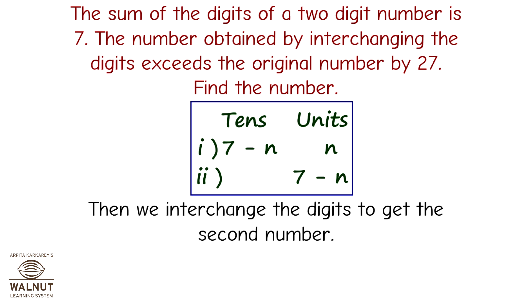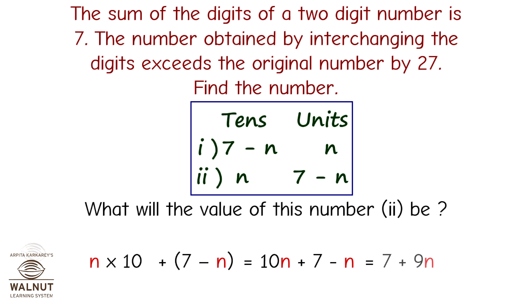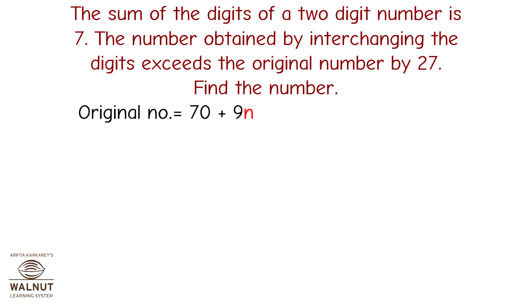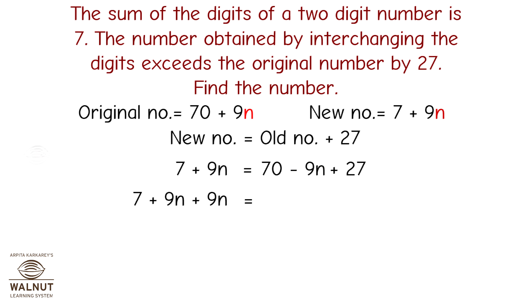We interchange the digits to get the second number. Its value is n into 10 plus 7 minus n, which equals 9n plus 7. Our original number equals 70 minus 9n and our new number equals 7 plus 9n. The new number equals the old number plus 27. Therefore 7 plus 9n equals 70 minus 9n plus 27, so 7 plus 18n equals 97.